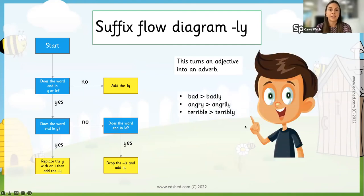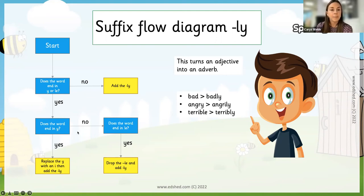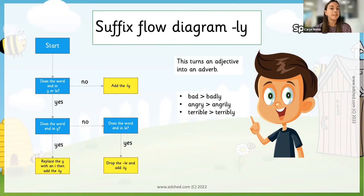Here is a really lovely flow diagram showing this for the suffix ly, changing adjectives into adverbs. This would be nice to have as a display, or have children use words on post-it notes and physically move them through the flow chart. For example, bad — does the word end in y or le? No — so we add ly for badly. Angry — does it end in y? Yes — so we replace the y with an i and add ly for angrily. And terrible goes to the le path — drop the le and add ly for terribly. That's a nice way to get children to sort words into these categories, and learning these things will help eliminate the tricky spellings we see all the time.